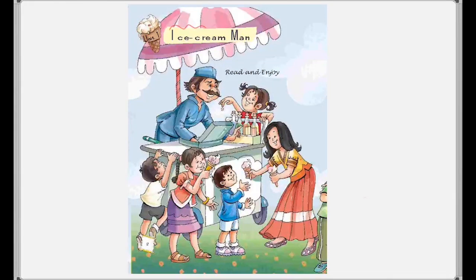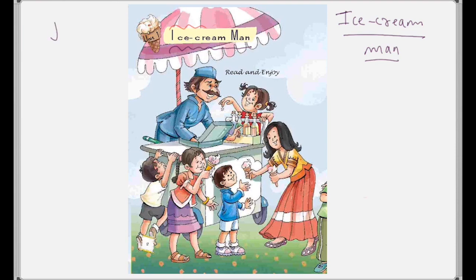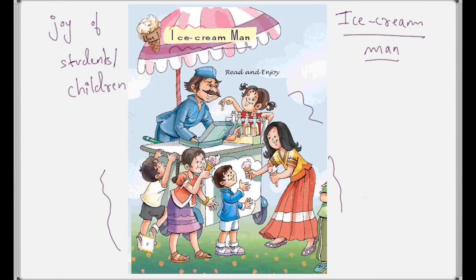Hello everyone, welcome to S2S Classes. In this video we will study Chapter 1 of Unit 1, Class 5th NCERT, that is 'Ice Cream Man.' So let us read and enjoy this poem. In this picture we are seeing an ice cream man, and we can clearly see that this is a poem completely about the joy of children when they eat ice cream. We can see many children have surrounded his cart.